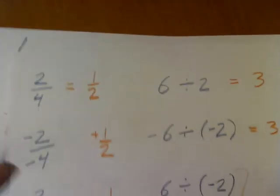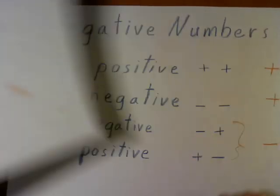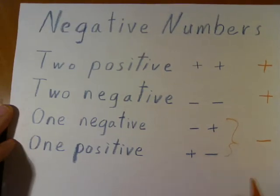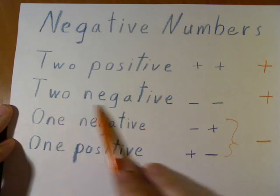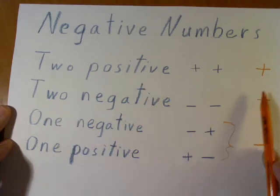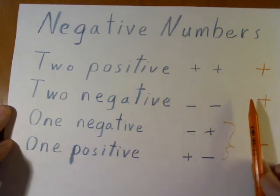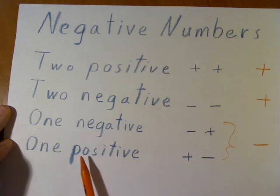Remember, when you are doing multiplication and division with negative numbers, 2 positives and 2 negatives gives us a positive number. 1 negative and 1 positive gives us a negative number.